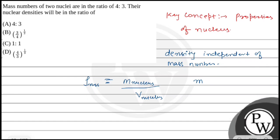Mass is proportional to mass number and volume is also proportional to mass number, so mass by volume means mass number by mass number cancel out.